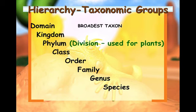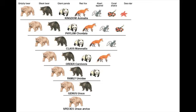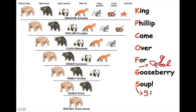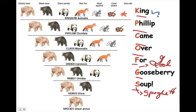A mnemonic is a way to remember by associating first initials with different words. For example: 'King Philip Came Over Four Gooseberry Soup' or 'King Philip Came Over For Good Spaghetti.' Either way, you get: kingdom, phylum, class, order, family, genus, and species.